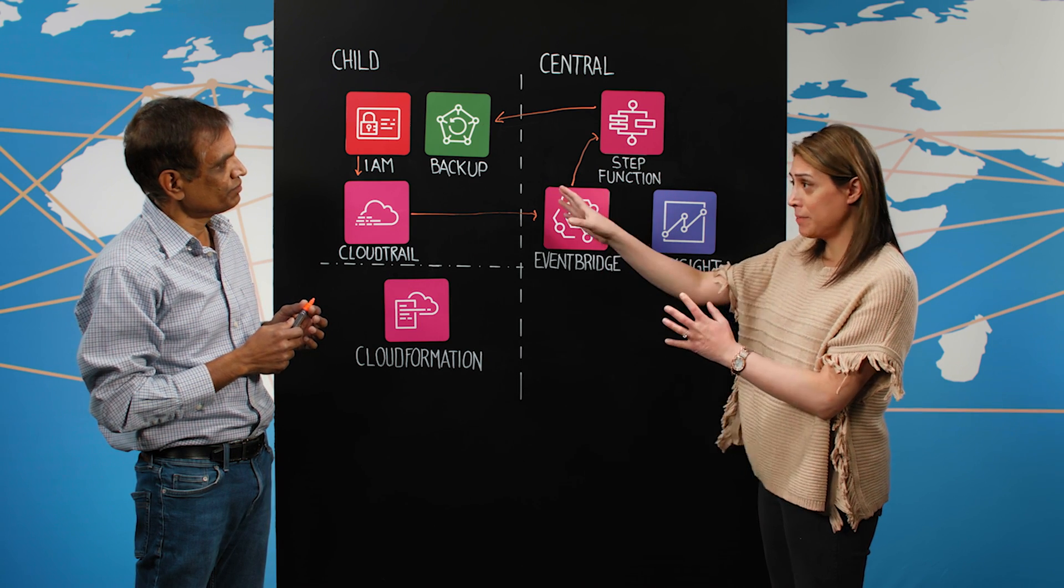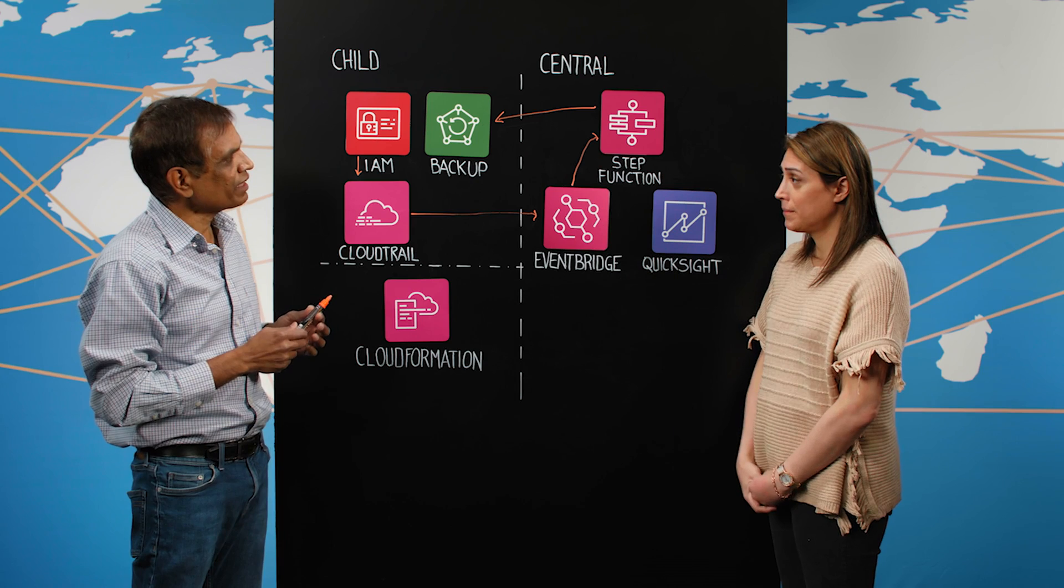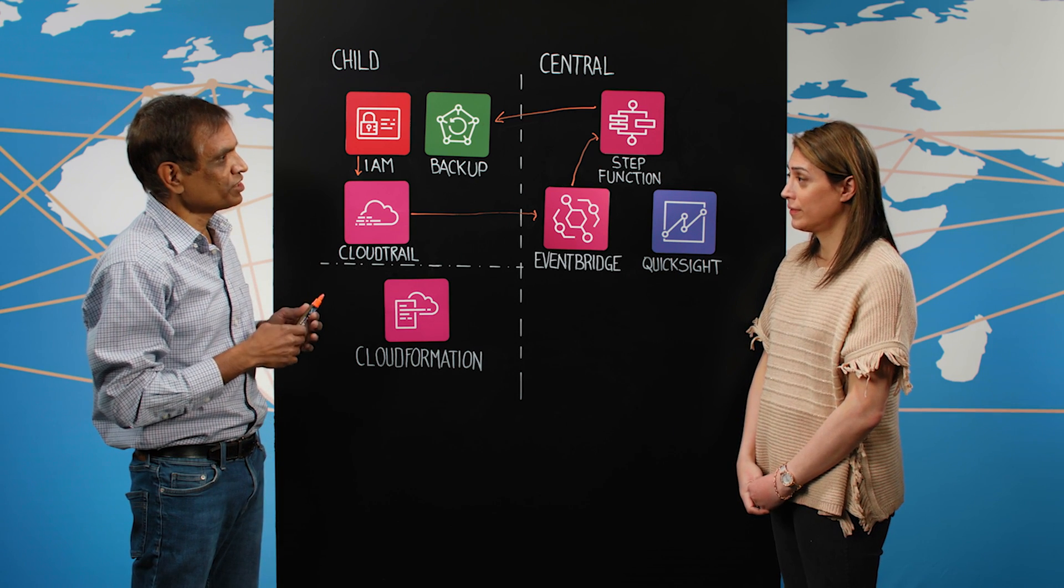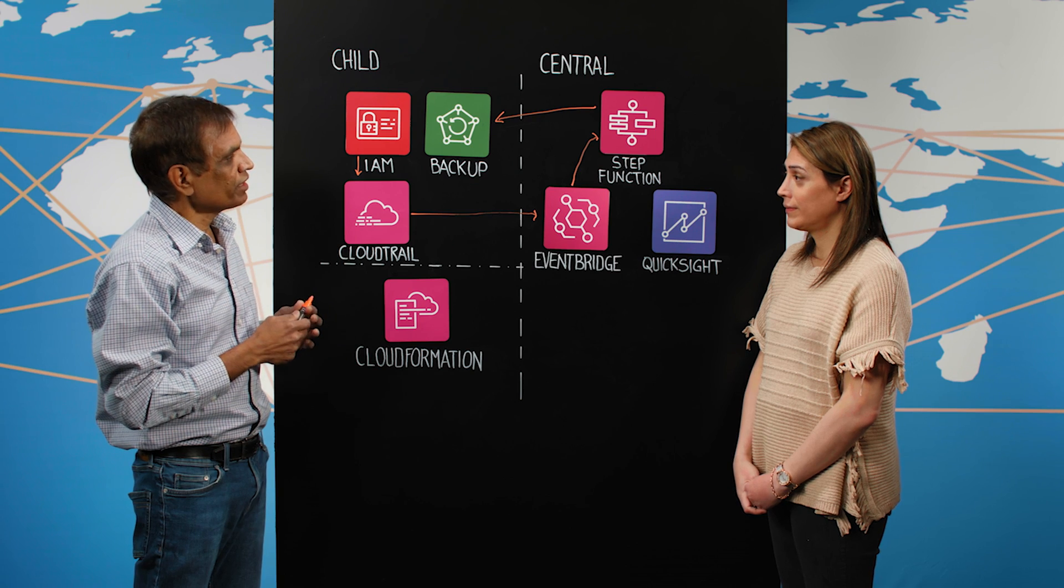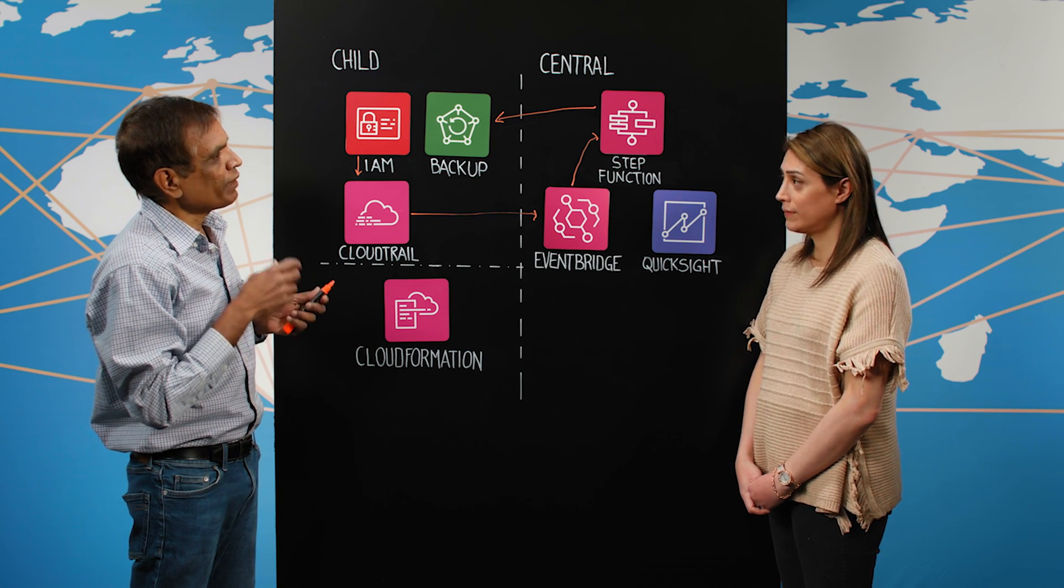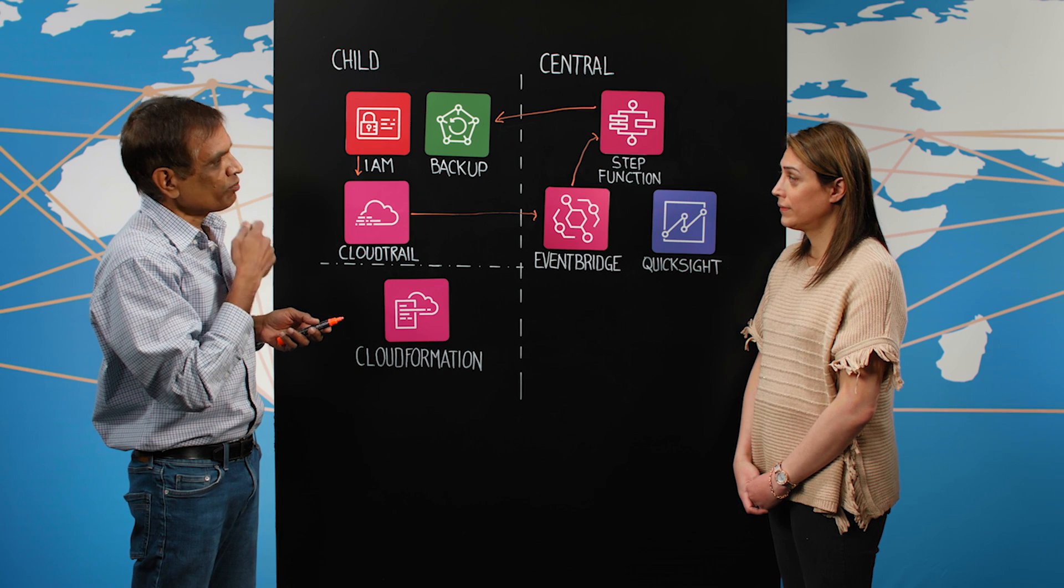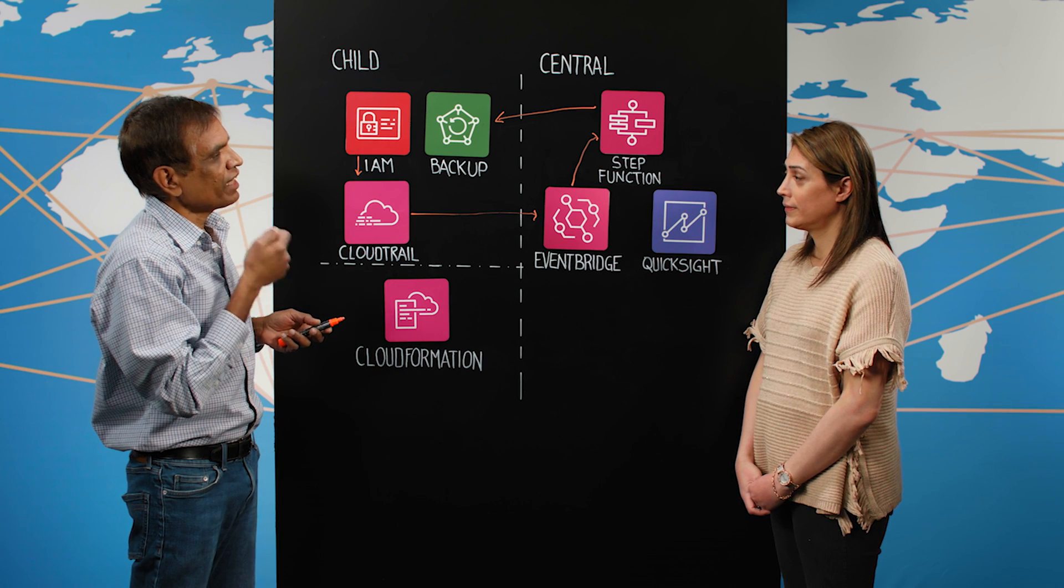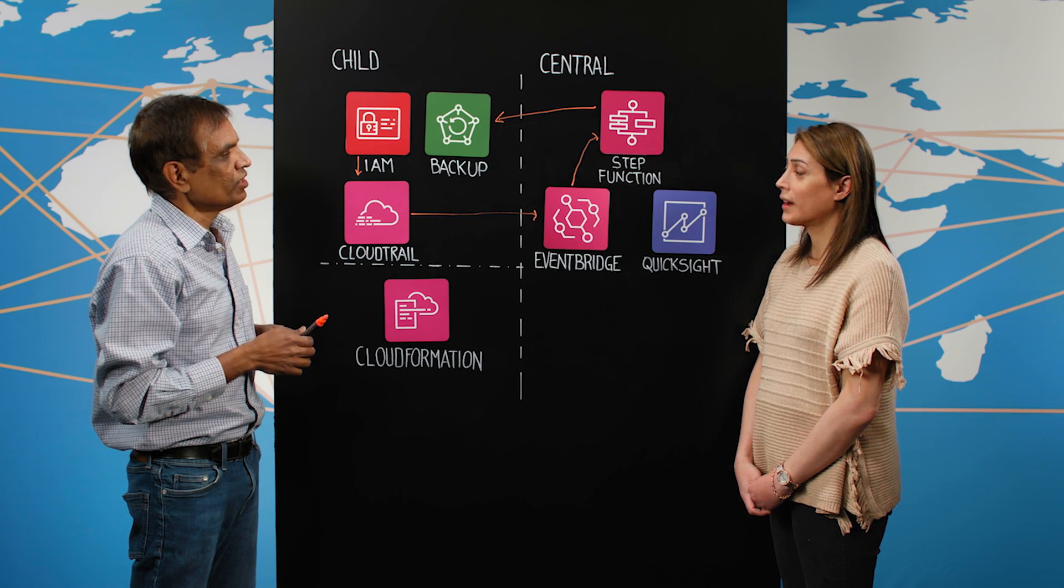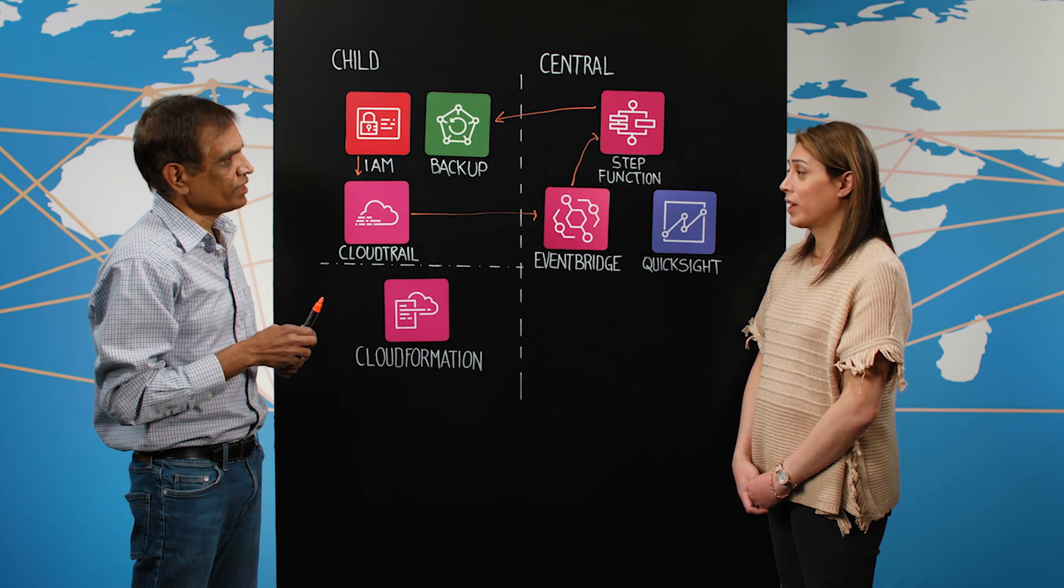How many backups are you performing? We backup a lot. Each application has one backup vault. But in general, we have two primary regions. So when a backup is taken, it copies it to both the regions as well as it copies it to a network isolated region to protect it from a ransomware event.